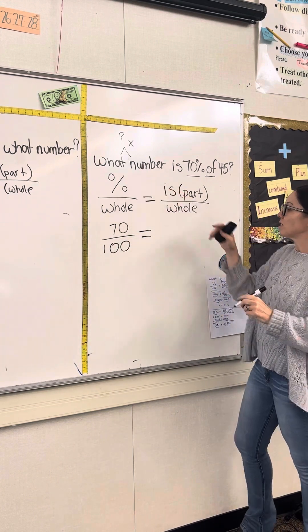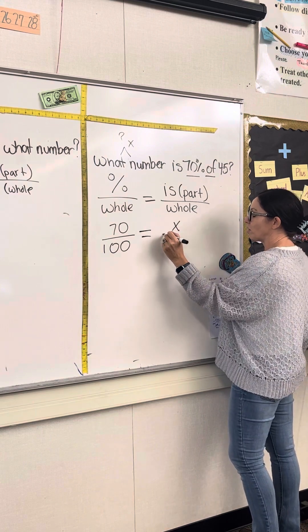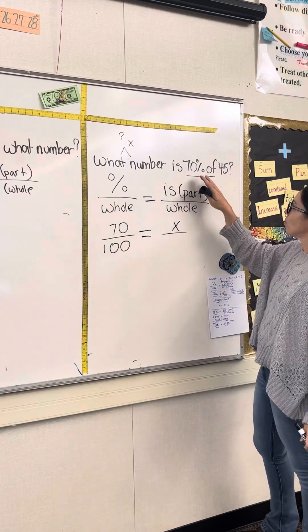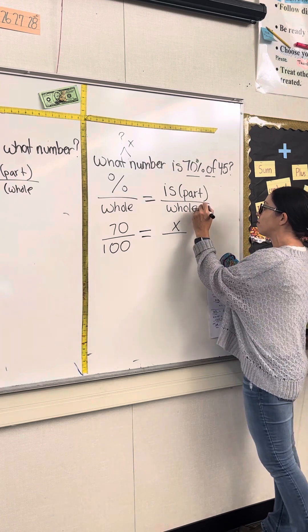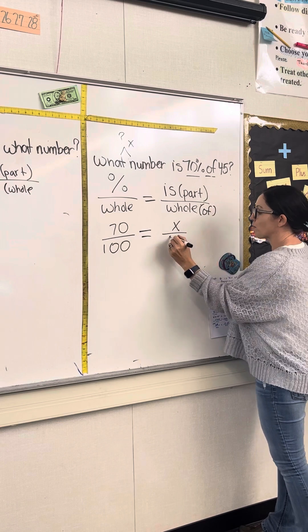What number? That's the unknown. This is the part that's unknown. And the whole, 70% of the whole is always of the number 45.